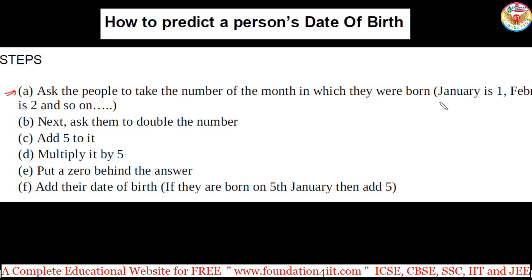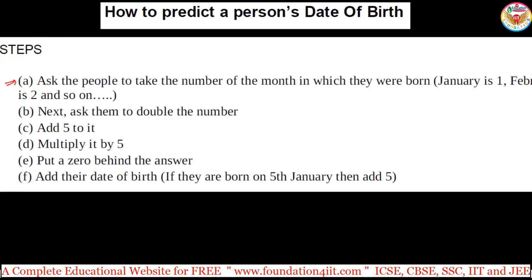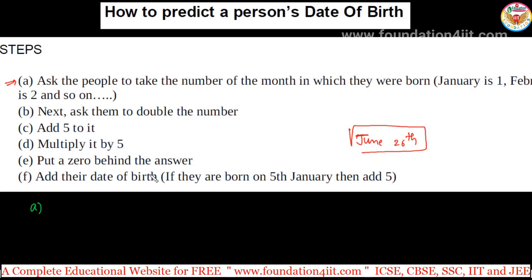Let them take the number of the month — January is 1, February is 2, and so on, December is 12. Next, ask them to double the number. Let me show you with an example. If the person's date of birth is June 26th — they will not tell us, they will calculate in their mind. We are not taking the year in this. Without telling us, he just calculates and reveals only the final answer.